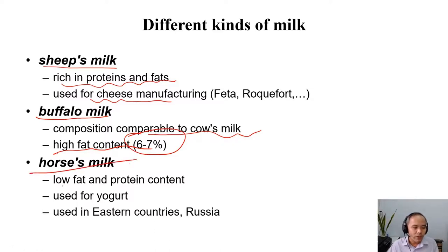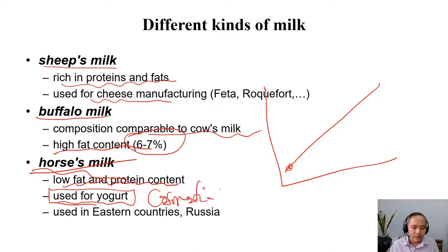Horse milk has low fat and protein content. If you remember the figure, horse milk is there at the bottom. So they contain low fat and low protein content. It's used for making yogurt. It's not suitable for making cheese because it has low casein content. Horse milk is actually very expensive. Normally, it's now used in cosmetics, in the cosmetics for applying on the skin and so on.